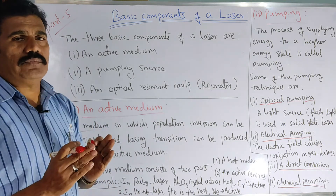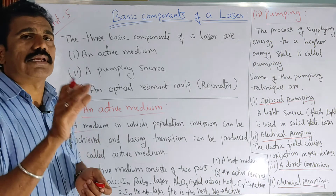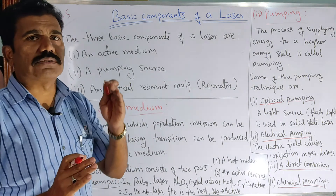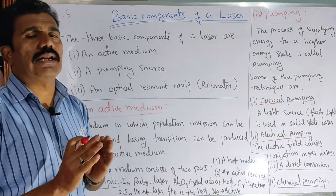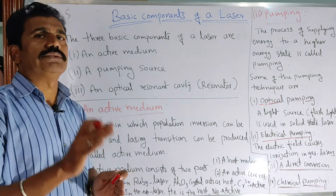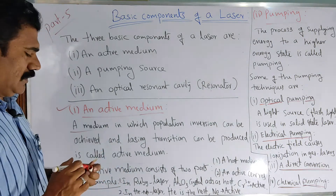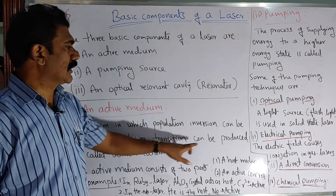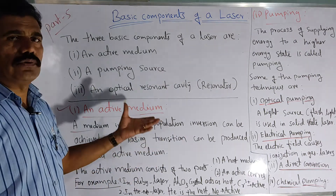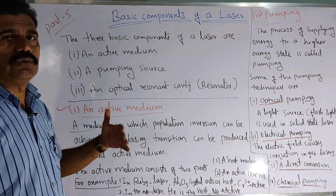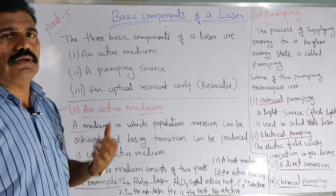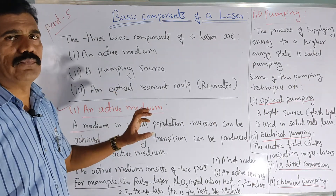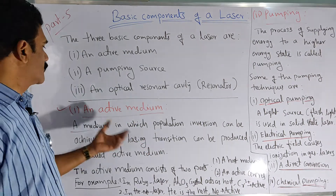Population inversion can be achieved in certain systems in which a metastable state exists, where atoms can accumulate for a longer time. After a certain given instant of time, population inversion is achieved in systems with atoms whose energy levels support getting population inversion. Such a medium is required as the active medium. Further, lasing transition can be produced — meaning there should be a transition of atoms from excited state to ground state to produce the required number of photons for the laser. The medium where this mechanism is possible is called the active medium.